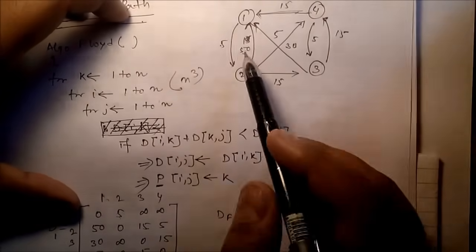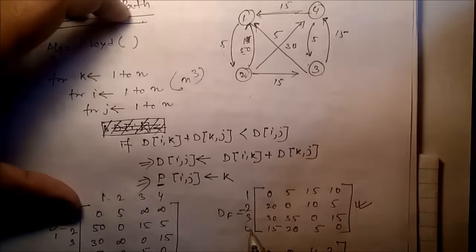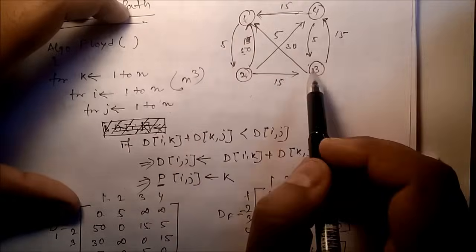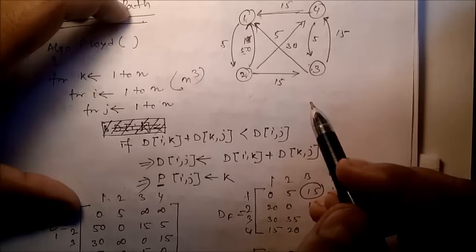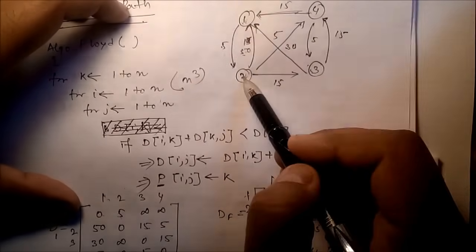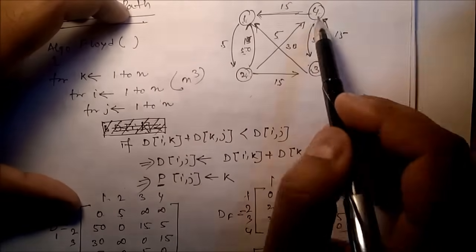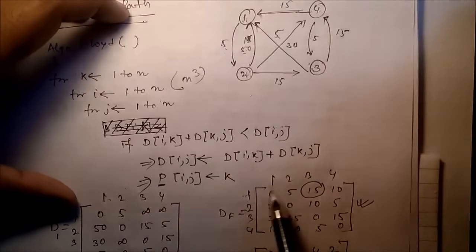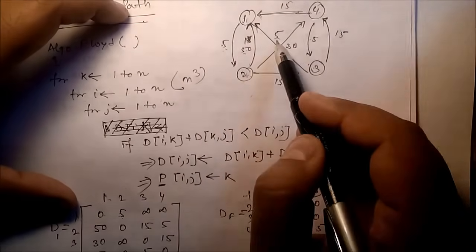For example, D[1][3] — what is the minimum distance from node 1 to node 3? The minimum distance is 15. How is that possible? We can move 1→2 (cost 5), then 2→4 (cost 5), then 4→3 (cost 5), giving 5+5+5 = 15. Similarly, D[1][4] is 10: we go 1→2 (cost 5) and 2→4 (cost 5), so 5+5 = 10.